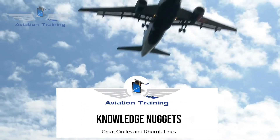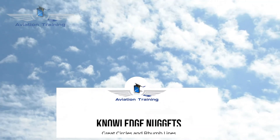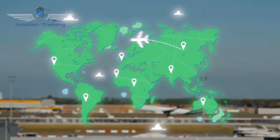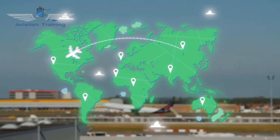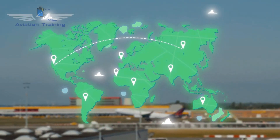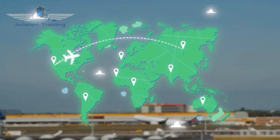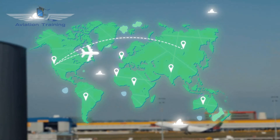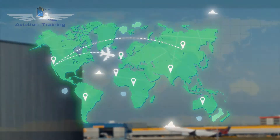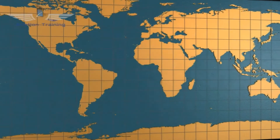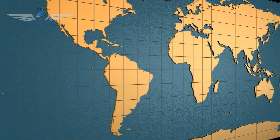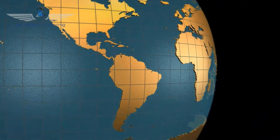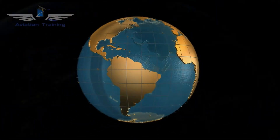ATCBT's Knowledge Nuggets: Great Circles and Rhumb Lines. Have you ever looked at airline route maps and wondered why the routes looked curved when they're actually flying a straight line? This is because it is often drawn on a flat Mercator chart, and not on the globe.